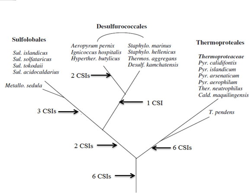Conserved signature inserts and deletions in protein sequences provide an important category of molecular markers for understanding phylogenetic relationships. CSIs, brought about by rare genetic changes, provide useful phylogenetic markers that are generally of defined size, and they are flanked on both sides by conserved regions to ensure their reliability.